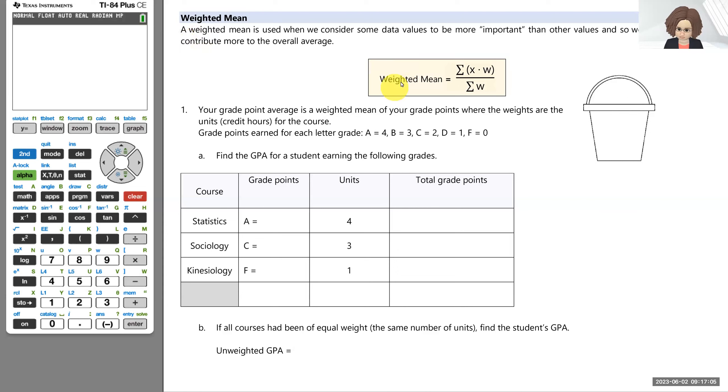We're going to talk about a weighted mean by looking at an example of your grade point average. As a Long Beach City College student, your grade point average is certainly important to you. So we're going to try to dive in a little bit and help you understand what your grade point average represents. It will be a weighted mean of your grade points where the weights are the units or credit hours for a course.